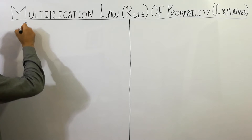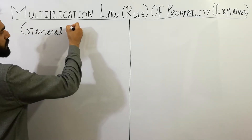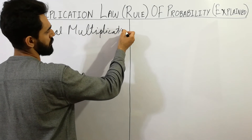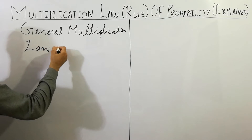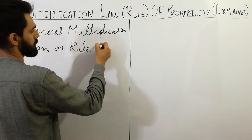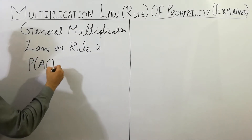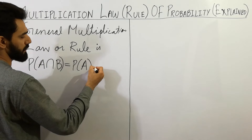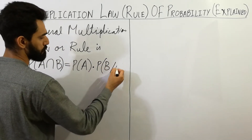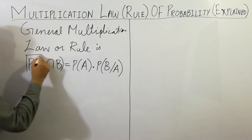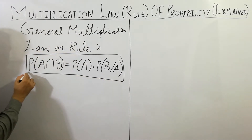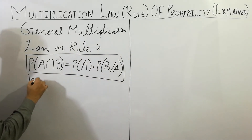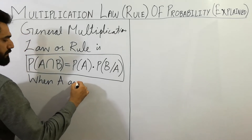First of all, I'm going to discuss the general multiplication law or rule. The probability of A intersection B is always equal to probability of A multiplied by probability of B given A. That is the general multiplication law and rule.